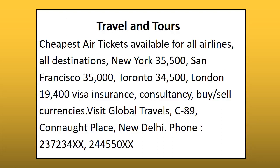The heading is Travel and Tours. The travel agency is offering air tickets at cheap rates, so we will start like this: Cheapest air tickets available for all airlines. All destinations — New York: 35,500; San Francisco: 35,000; Toronto: 34,500; London: 19,400. Visa, insurance, consultancy. Buy or sell currencies. Visit Global Travels, C-89, Connaught Place, New Delhi. After that, give the phone number.